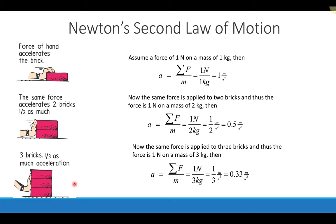Remember that as you see questions examining what happens to a quantity if you double another quantity, you can always throw some easy numbers in to start with — like one is always easy. Figure out what that value would be, then see what happens when you change the value. In this case, we doubled the mass and could see how that affects the acceleration compared to what we started with.